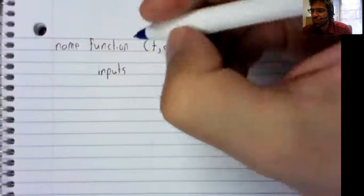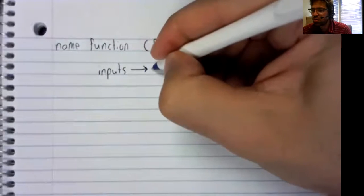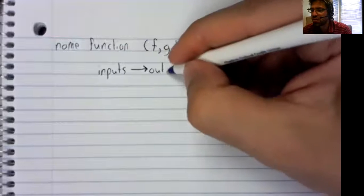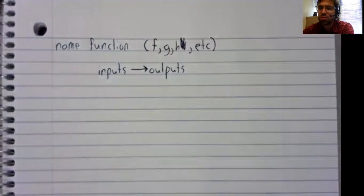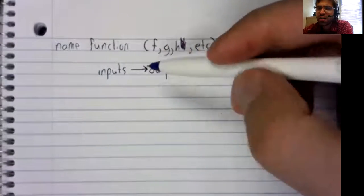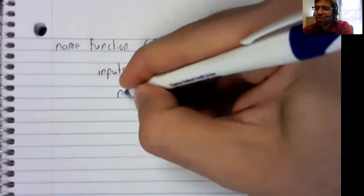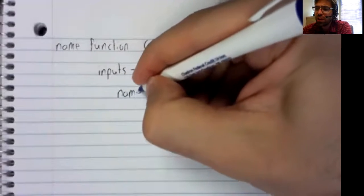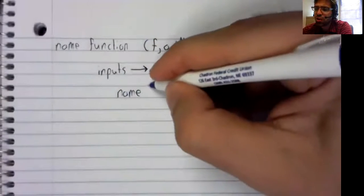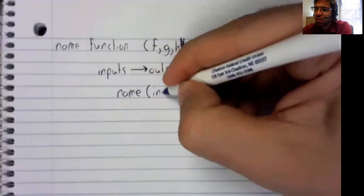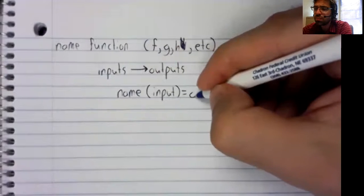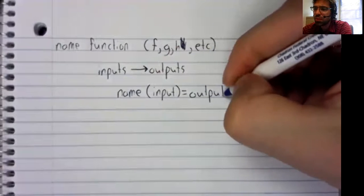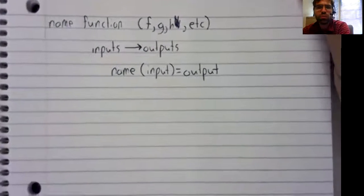And this function takes inputs and spits back outputs. And we can express this compactly as follows. We write the name of the function in parentheses, we put the input equals the output.